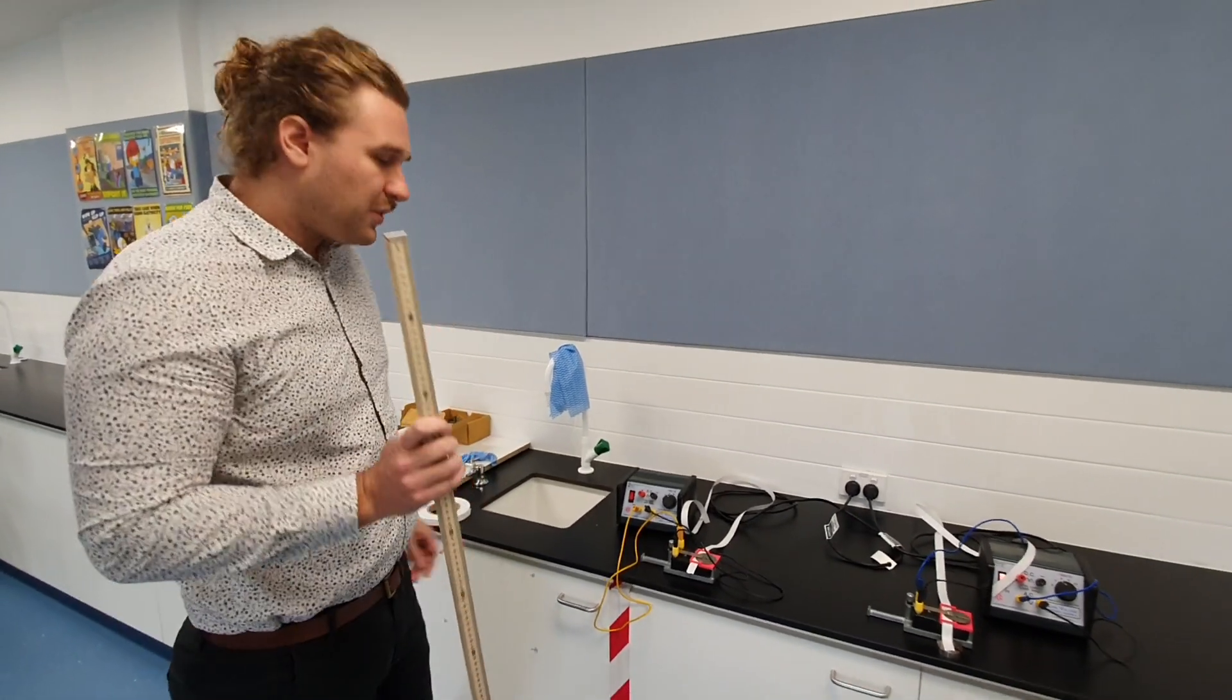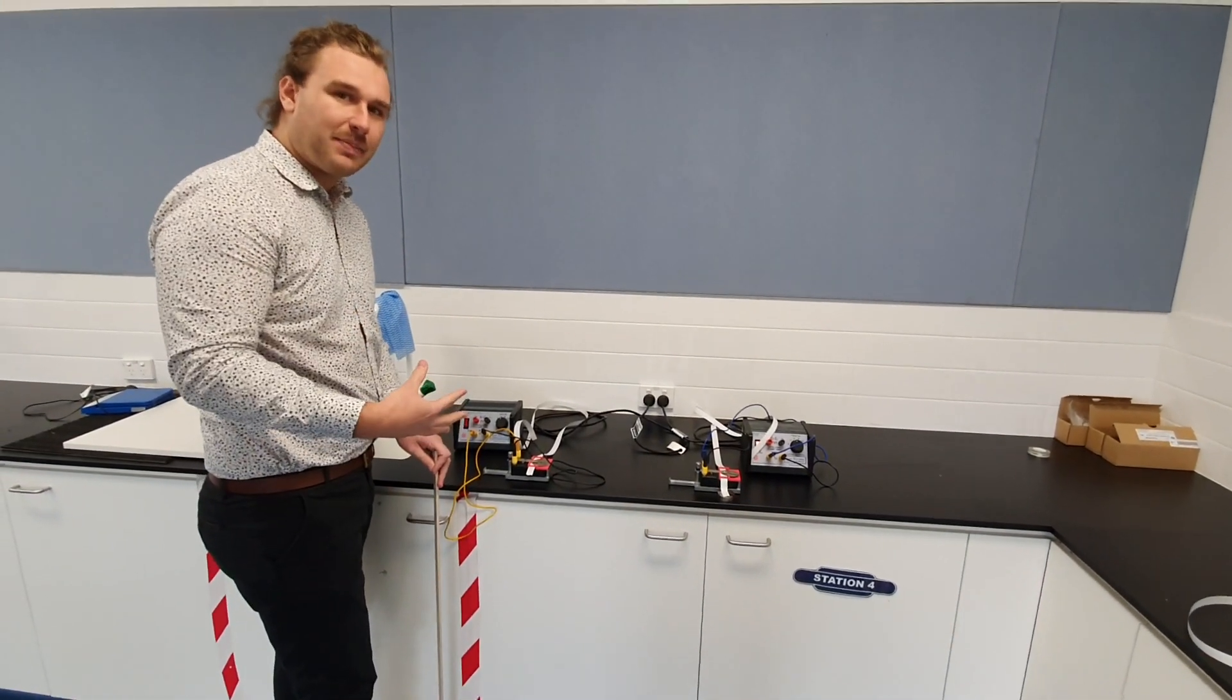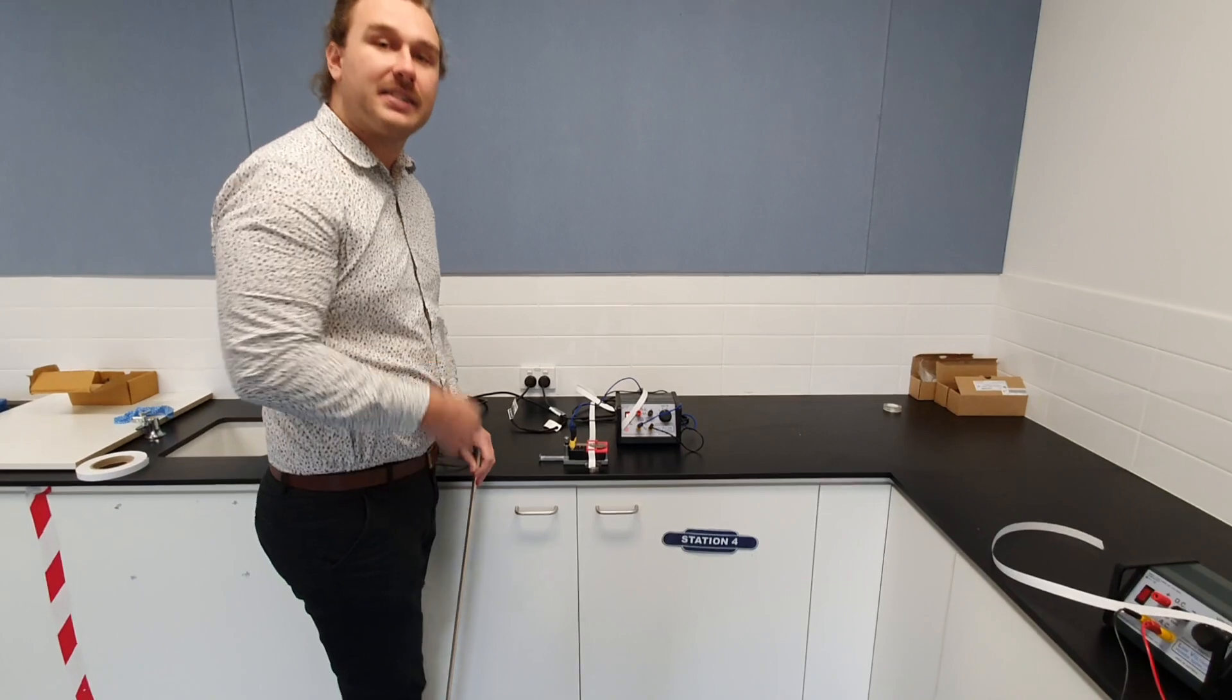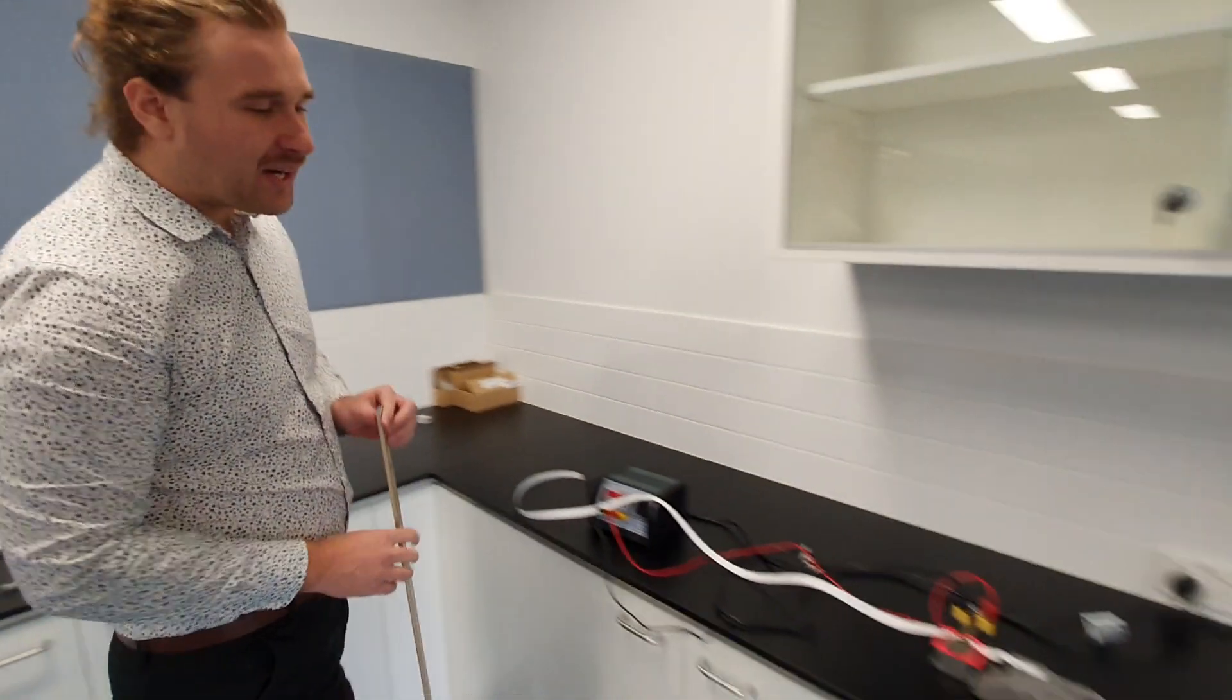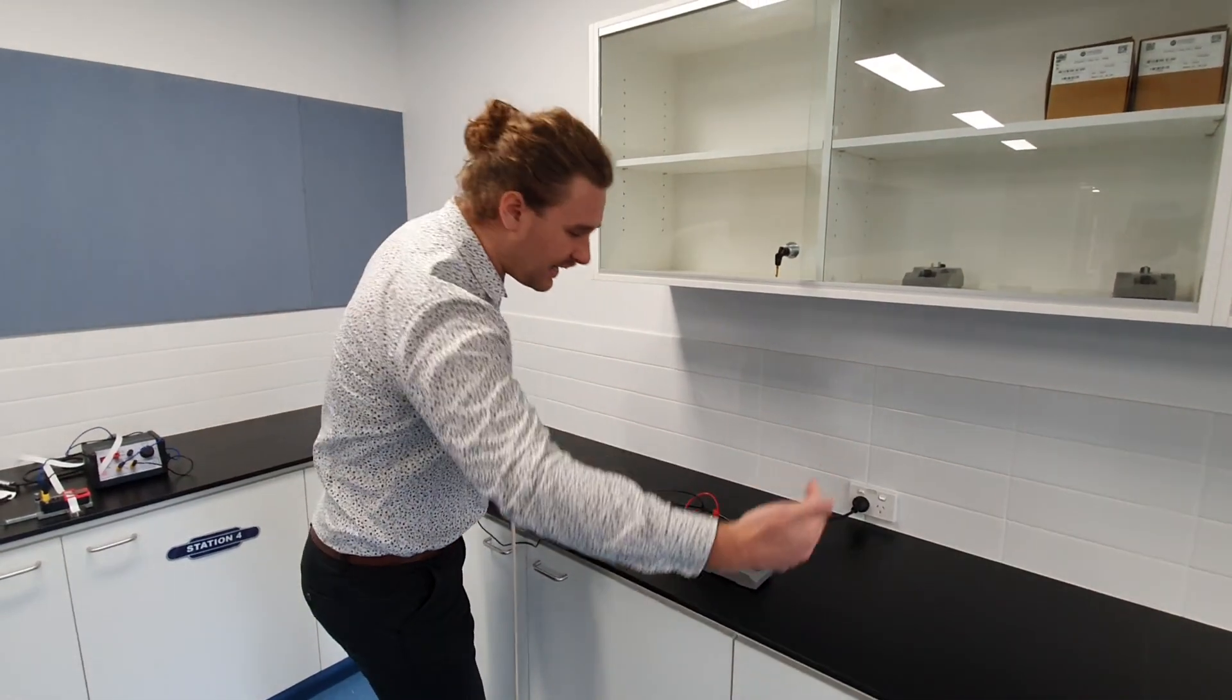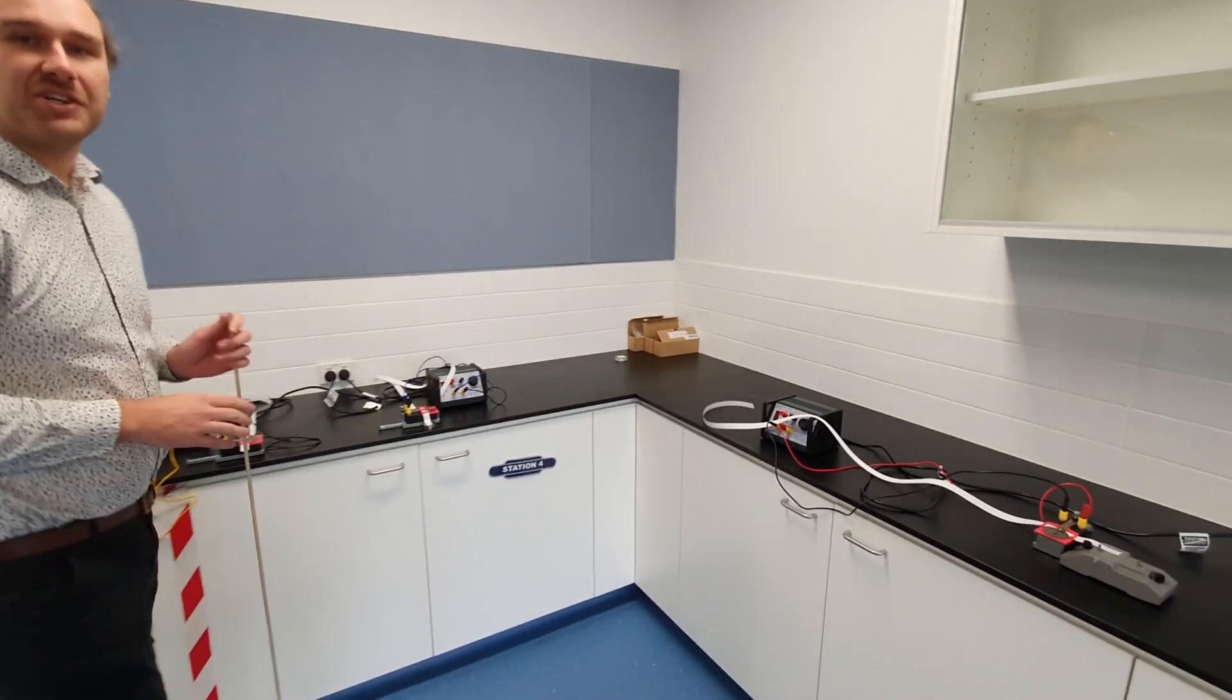So what we're going to do for this experiment: one ticker timer where I try and pull this through at fairly constant speed. One here where I'm going to drop a weight to the ground and see what gravity does to the ticker tape. And a third one where we're going to push this cart along and friction is a force that's going to decelerate the cart. So hopefully we're going to see constant speed, acceleration, and then deceleration.